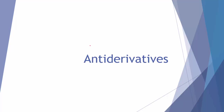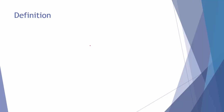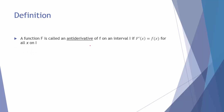These are going to be our notes for antiderivatives. We're going to start off with the definition. We call a function F — notice this is capital F — an antiderivative of lowercase f on an interval I, if the derivative of the capital F function gives you the lowercase f function for all x on that interval. An antiderivative essentially undoes a derivative.